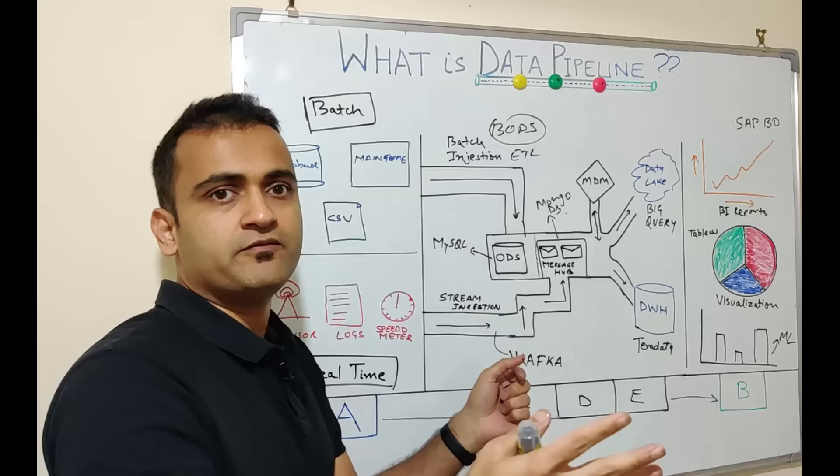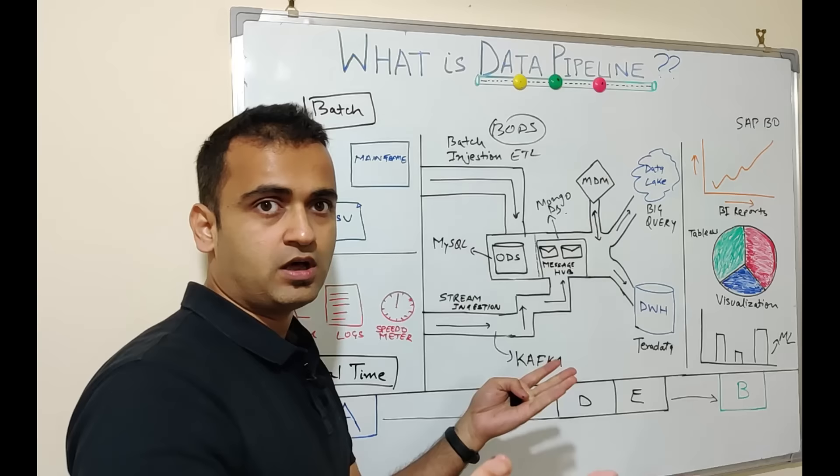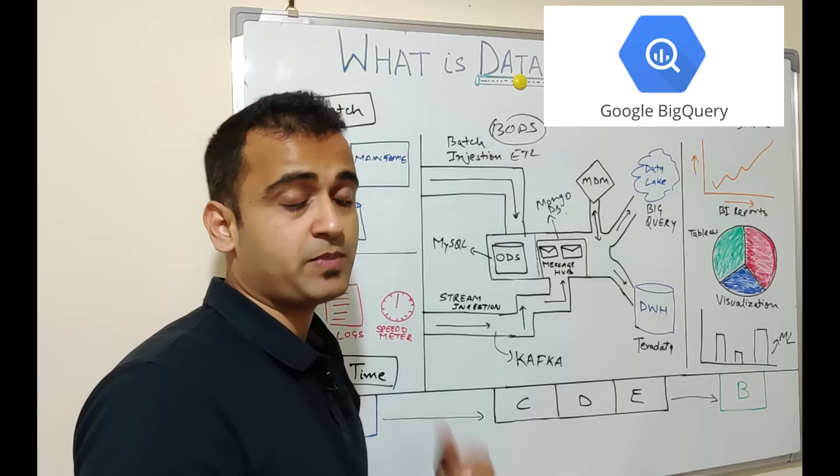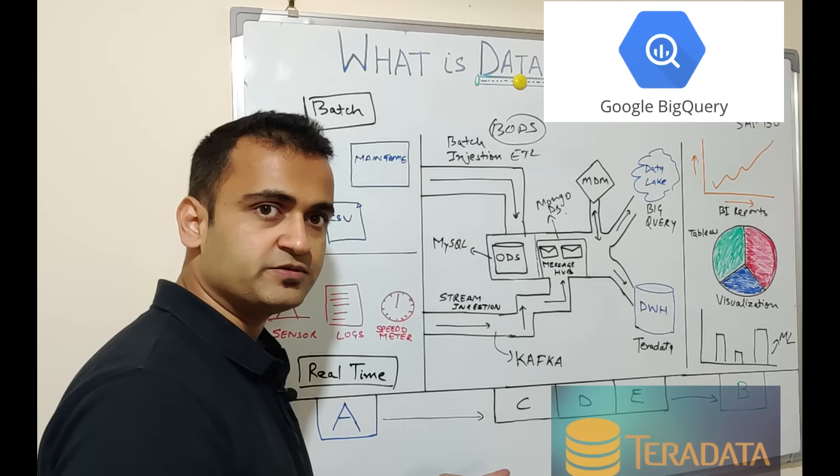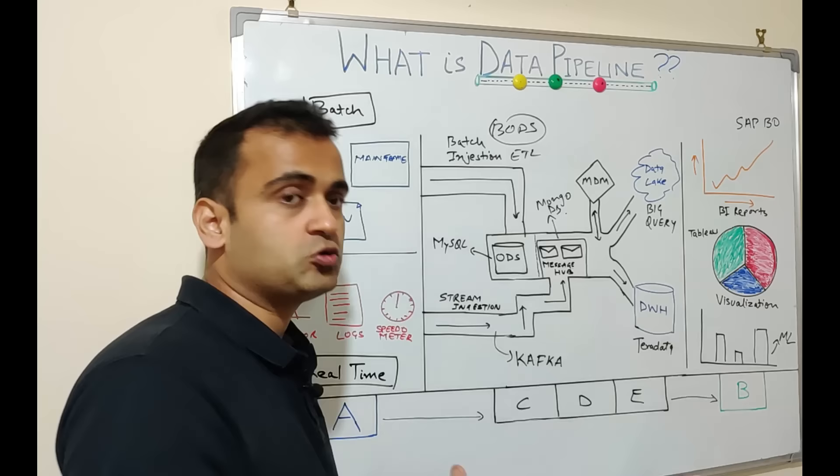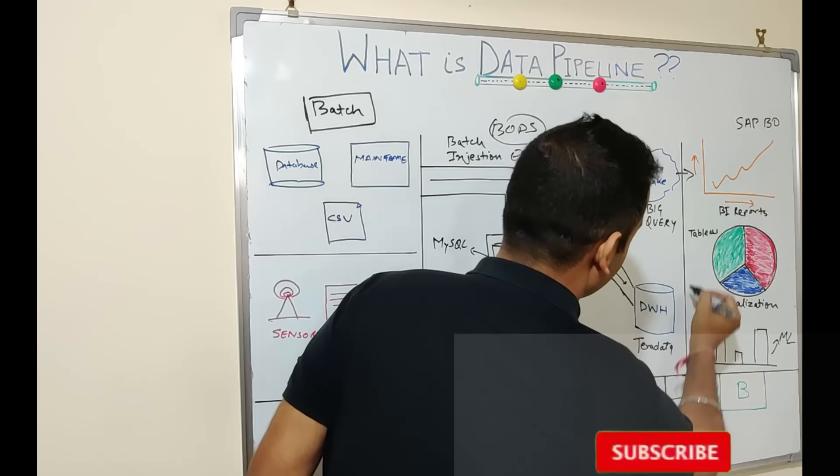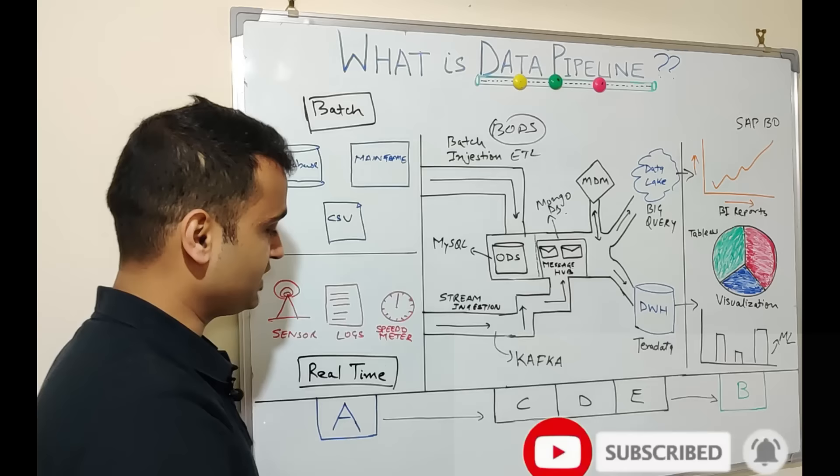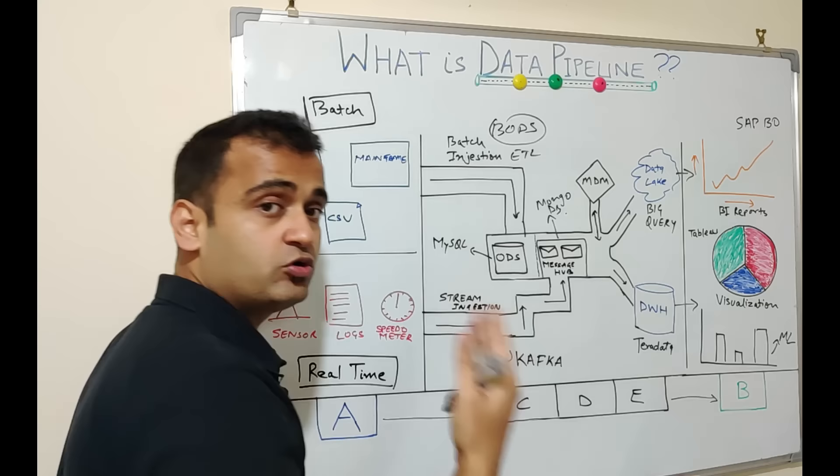Once this whole data is ready, it can flow into various target streams. It can go into a data lake—a possible product could be Google BigQuery which can store your data on the cloud as part of your data lake solution. You can have your data going into a Teradata data warehouse. There can be multiple products. I am trying to give you some products so that you can understand how you can design this whole data pipeline. And eventually once everything is ready, you have data finally going into point B which is your data consumer.